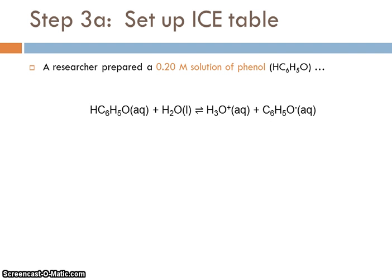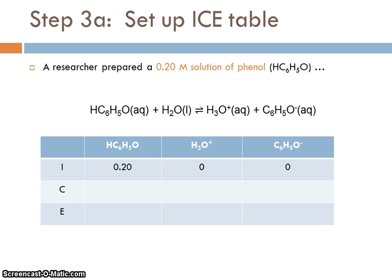And then we're ready to set up our ICE table. Now, if we go back to the original problem, we were told that the phenol solution was originally 0.20 molar. So when we go to set up our ICE table, we have the phenol concentration is 0.2. Before the equilibrium is established, the hydronium ion was 0. We're going to ignore any contribution of hydronium ion from water, because it's much tinier than what we'll get from this. And the anion, the conjugate base, were both 0.